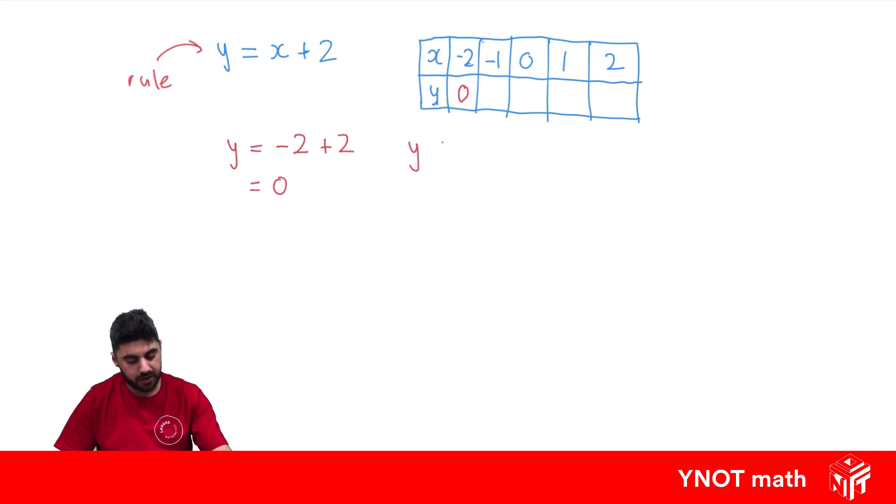What about when x equals minus 1? So instead of x we write minus 1 plus 2. Minus 1 plus 2 gives us 1. And that's the value for here. What about when x equals 0? We're going to have 0 plus 2. 0 plus 2 is 2. So we're going to get 2.